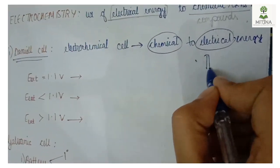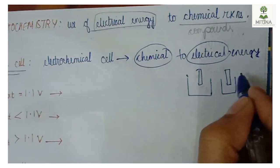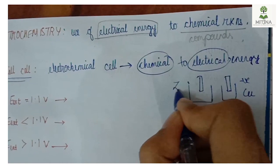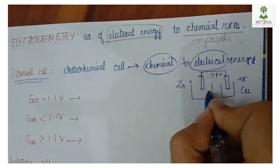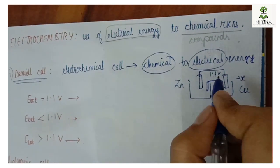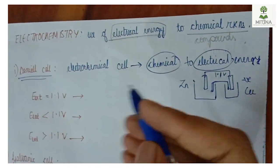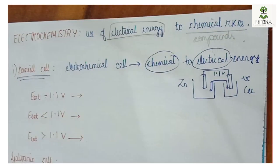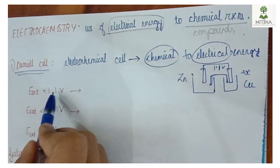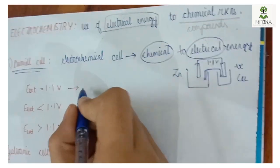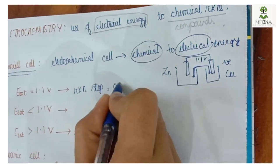Let's say this is a positive electrode or a negative electrode. This is a copper or zinc electrode. This is the internal voltage of 1.1V. This is the salt bridge. This is the external potential at 1.1V. This is the reaction stop point, and this is the current flow.